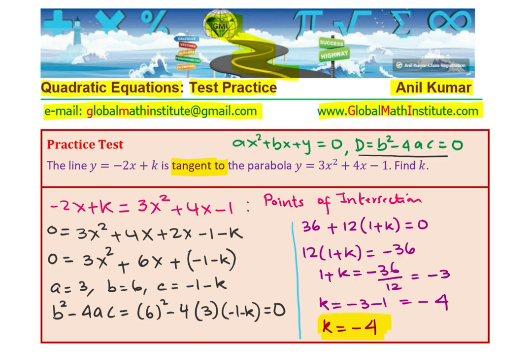And for this value of k, the line will be tangent to the given parabola. Makes sense? So that is how we have to solve this particular question.